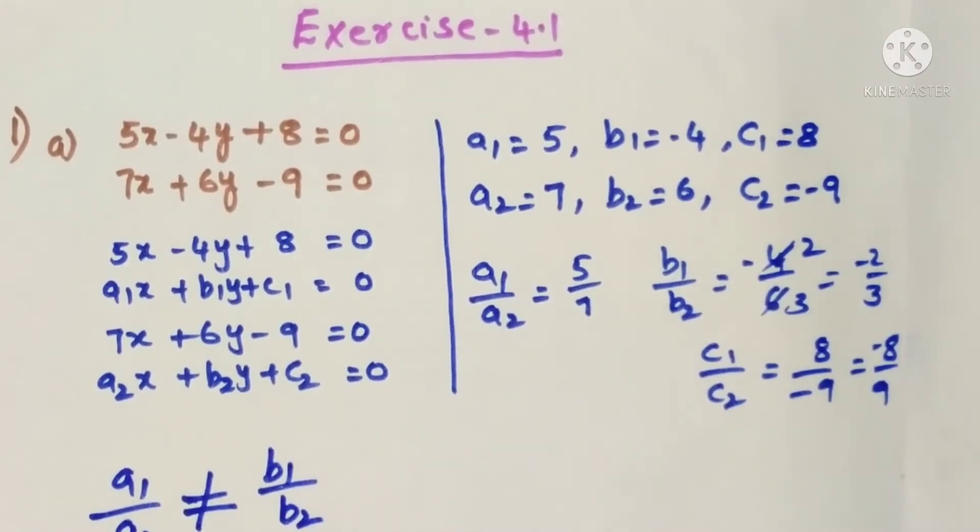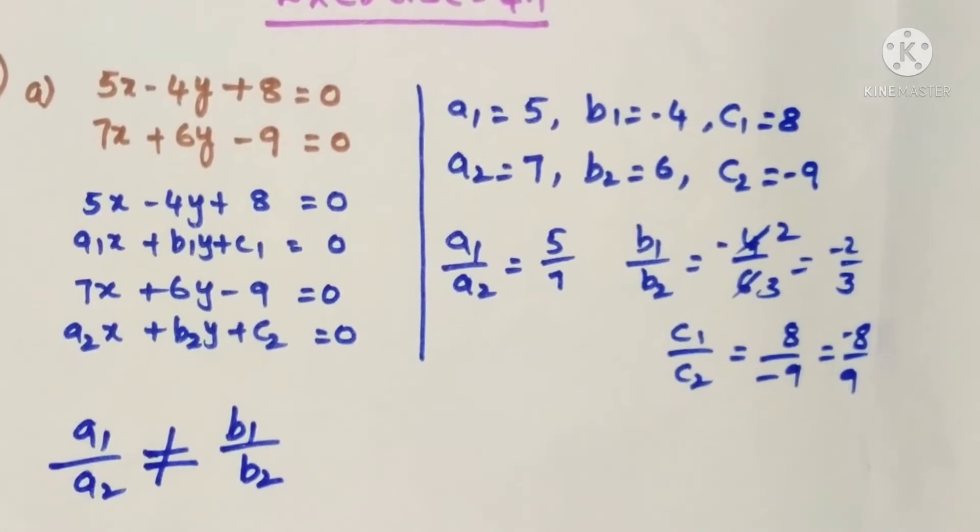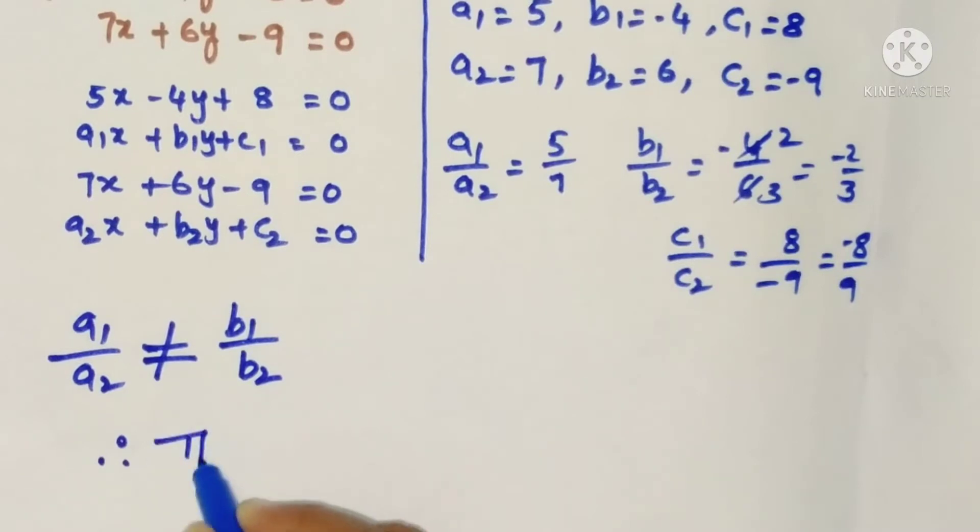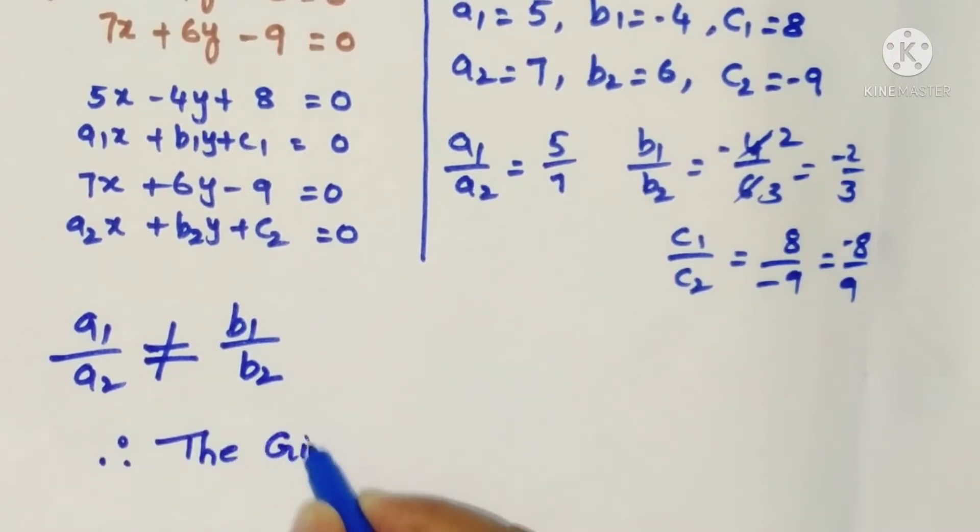So a1 by a2 not equals to b1 by b2 means these two lines are intersecting lines. Therefore the given lines are intersecting lines.